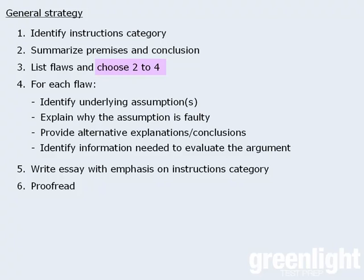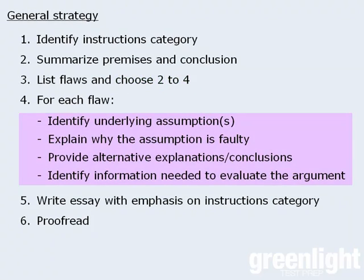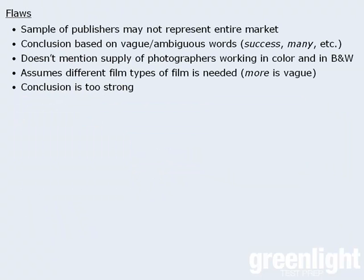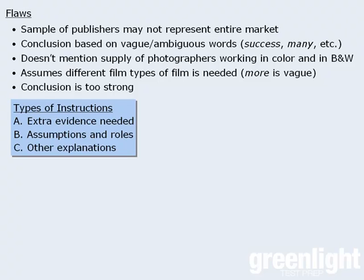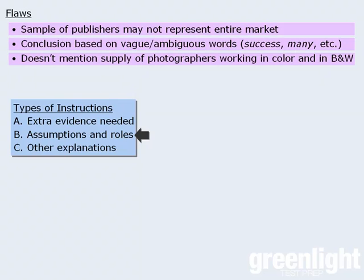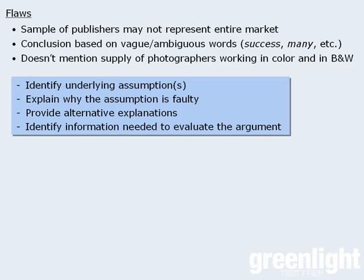From here, our next step is to choose 2 to 4 flaws, and for each flaw, we'll elaborate on the following areas. So here are the flaws we've identified. Which ones should we work with? Well, before we decide this, we should keep in mind that the instructions for this particular prompt fall under the category of Assumptions and Roles. So, which of these flaws are best suited to an essay with an emphasis on assumptions? I happen to like these three, so let's use them. For each of these flaws, we're going to look for some discussion points based on some of these tasks. Since the given instructions direct us to focus on assumptions, we'll devote more energy on these tasks and examine the others only occasionally. If the instructions were from a different category, then our emphasis would be on different tasks.